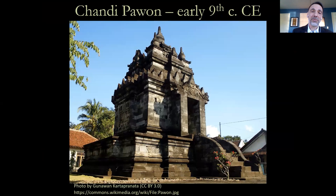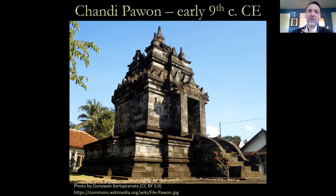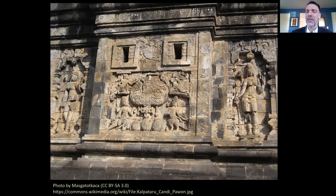Continuing down the path, we get to the site of Chandi Pawon. It's a little deceptive — it might seem the same size as Mendut, but in fact it's much, much smaller; a person basically fills the doorway. There was a lot of debate among scholars about what exactly Pawon was used for. There's no main image inside and it's not clear to whom it was dedicated. What you find in the interior is a low pit, and if you look at the back, there are two vents that lead outside the building. For this reason, scholars have concluded it was used for burnt offerings, probably incense. It seems like there's a focus on the dead — perhaps a place to honor one's ancestors.